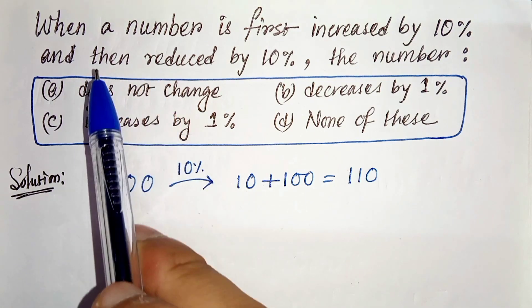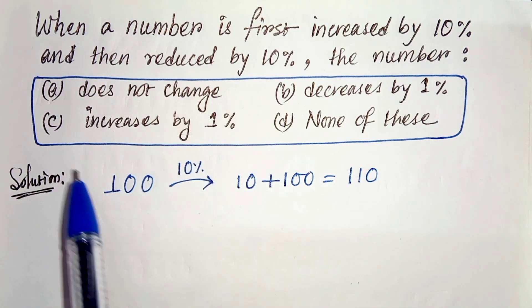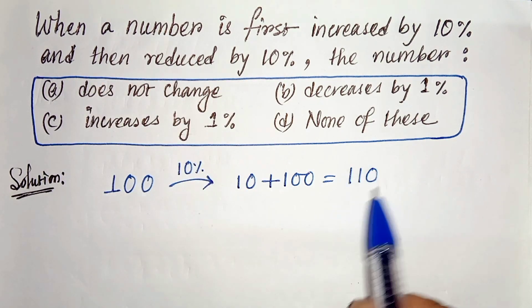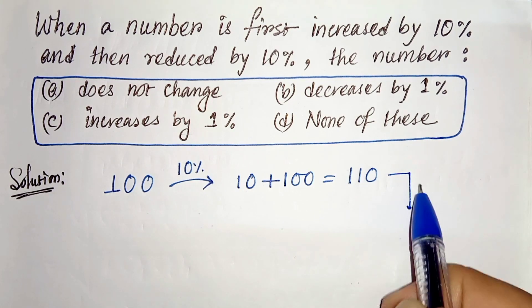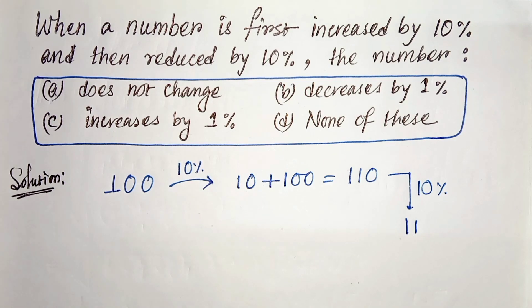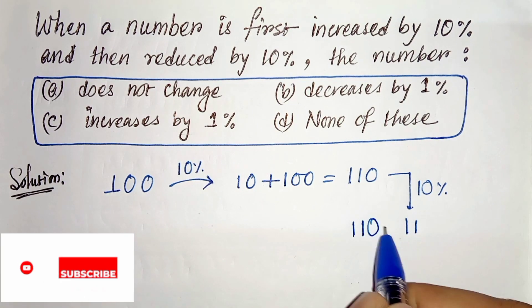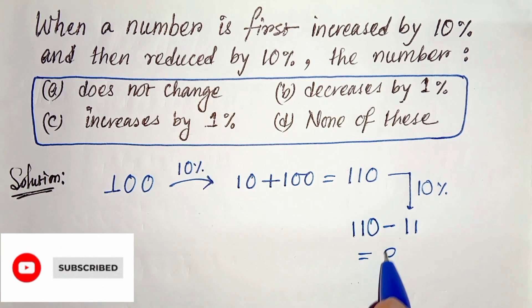And next, it says then reduced by 10%, so we have to reduce 110 by 10%. So 10% of 110 is 11, and if we reduce it by 10%, so 110 minus 11, it becomes 99.